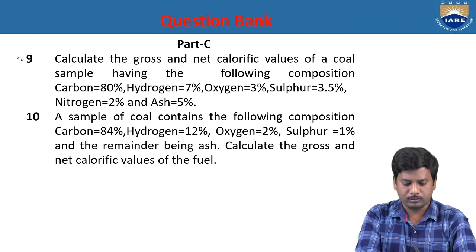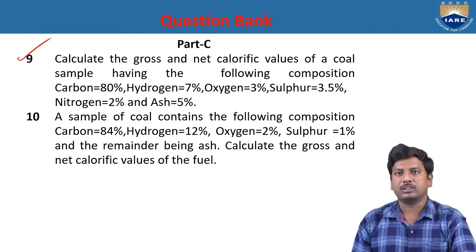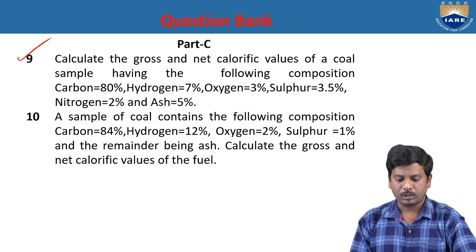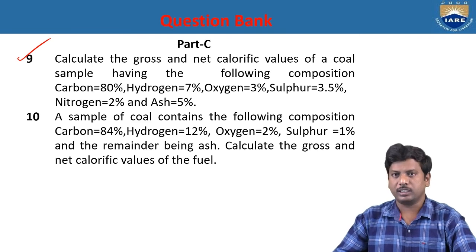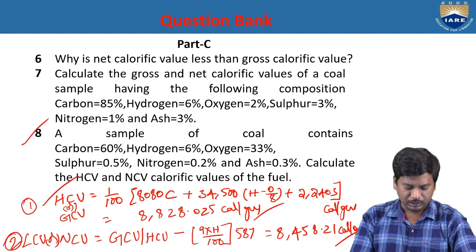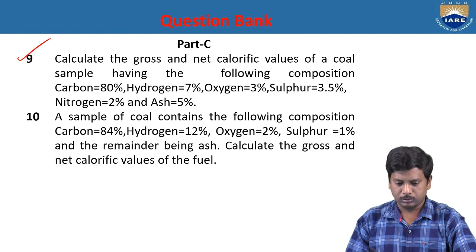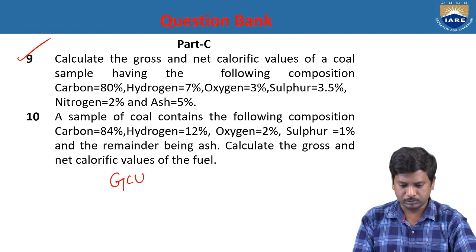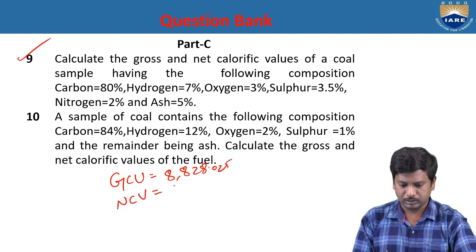For the ninth problem, calculate the gross and net calorific value of a fuel sample with composition: C = 80%, H = 7%, O = 3%, S = 3.5%, N = 2%, ash = 5%. Using the GCV and LCV formulas, GCV = 8,828.025 cal/g and LCV = 8,458.21 cal/g.